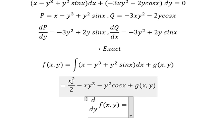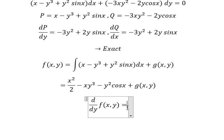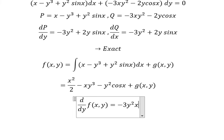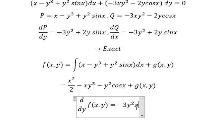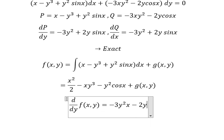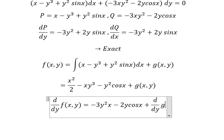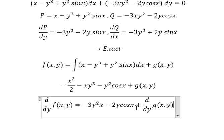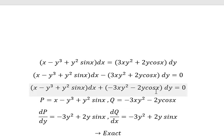Taking the first derivative with respect to Y: the X squared over 2 term gives 0, the Y cubed term gives 3Y squared, the first derivative of Y squared gives negative 2Y, cos(x) remains, and we have the partial derivative of G(x,y) with respect to Y. We know this must equal P.